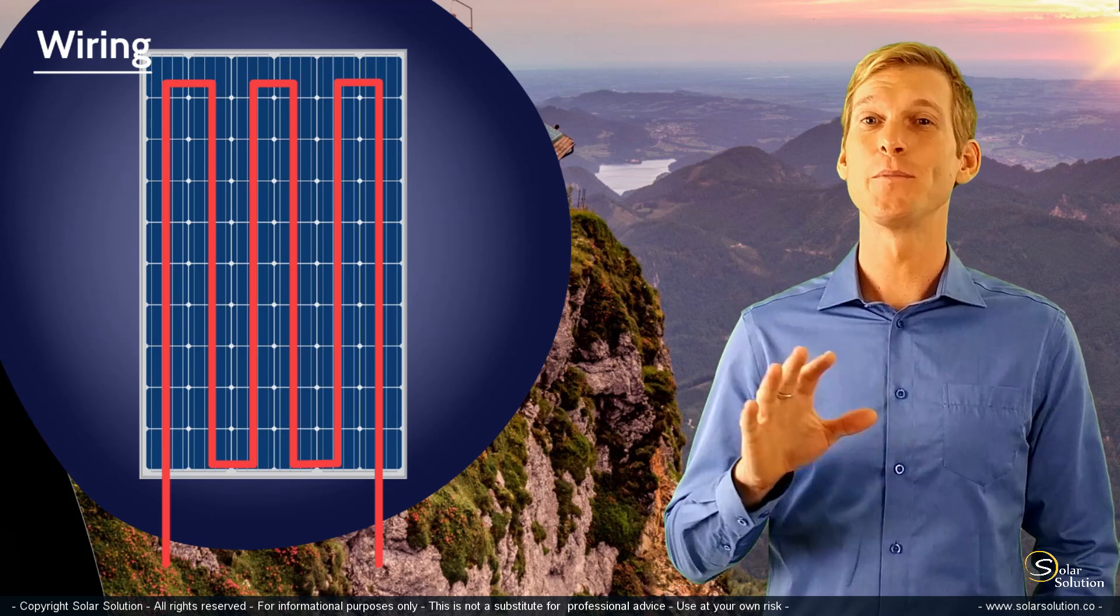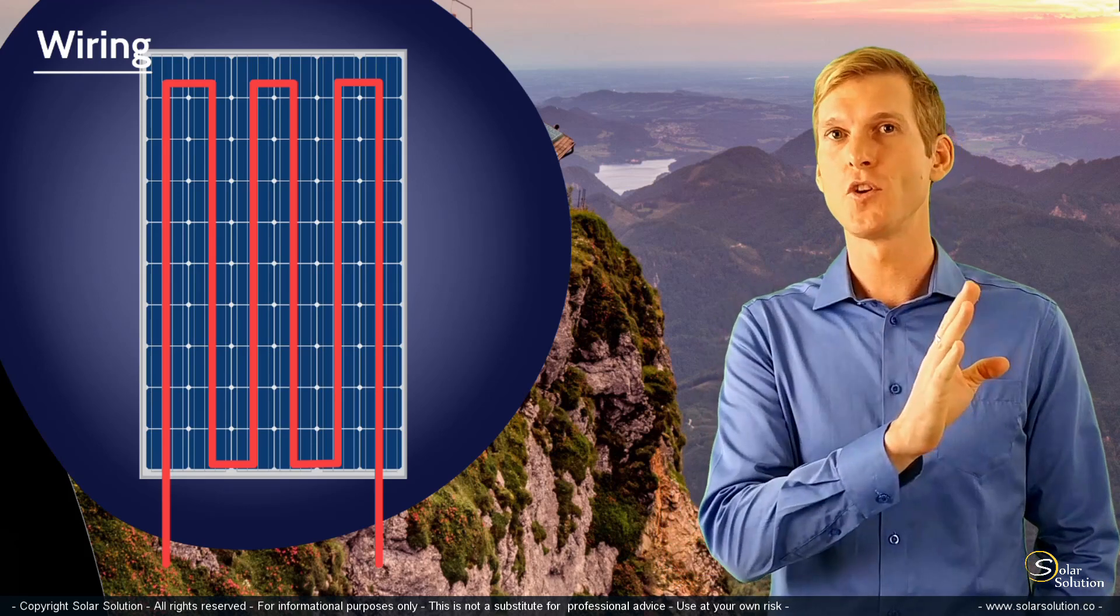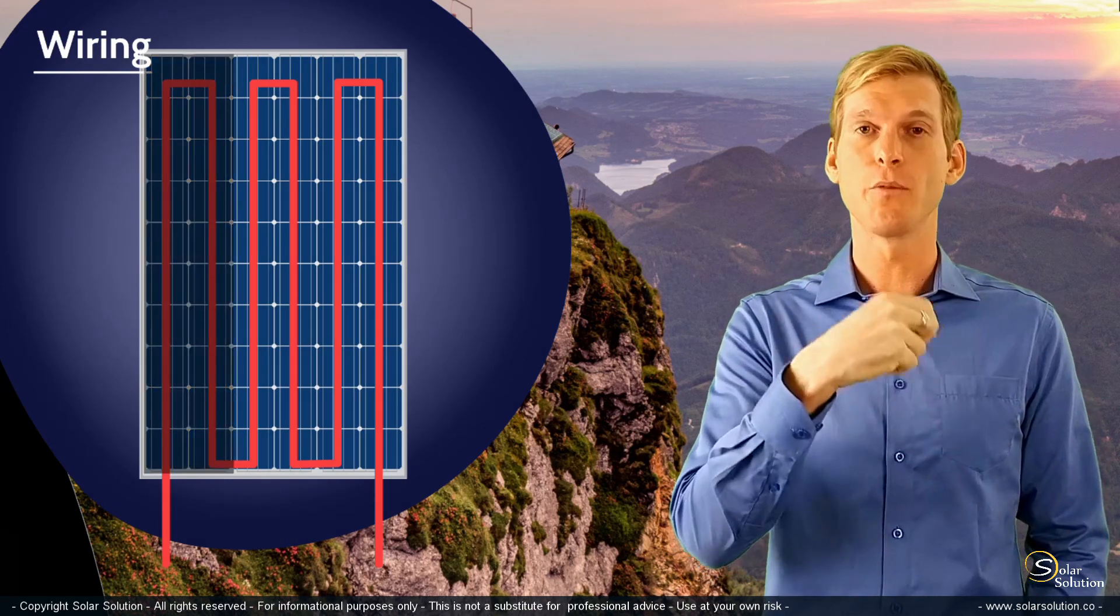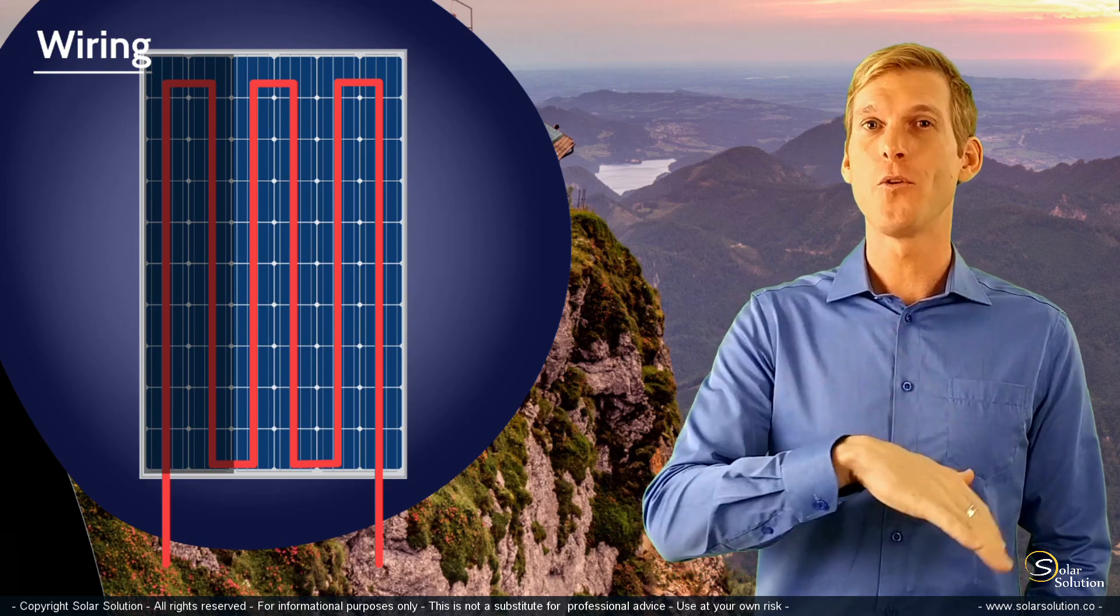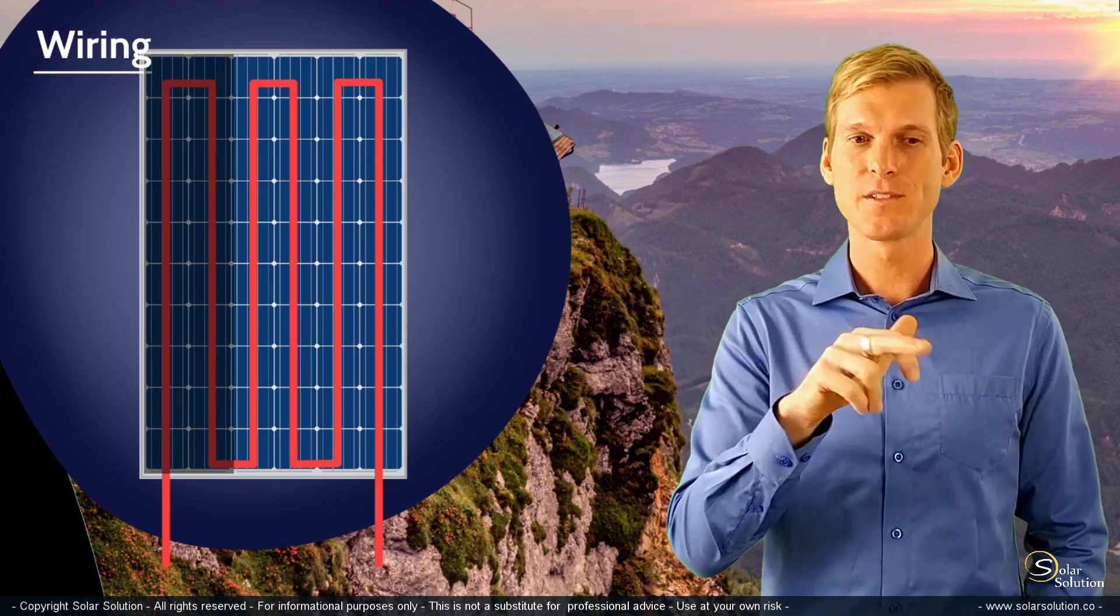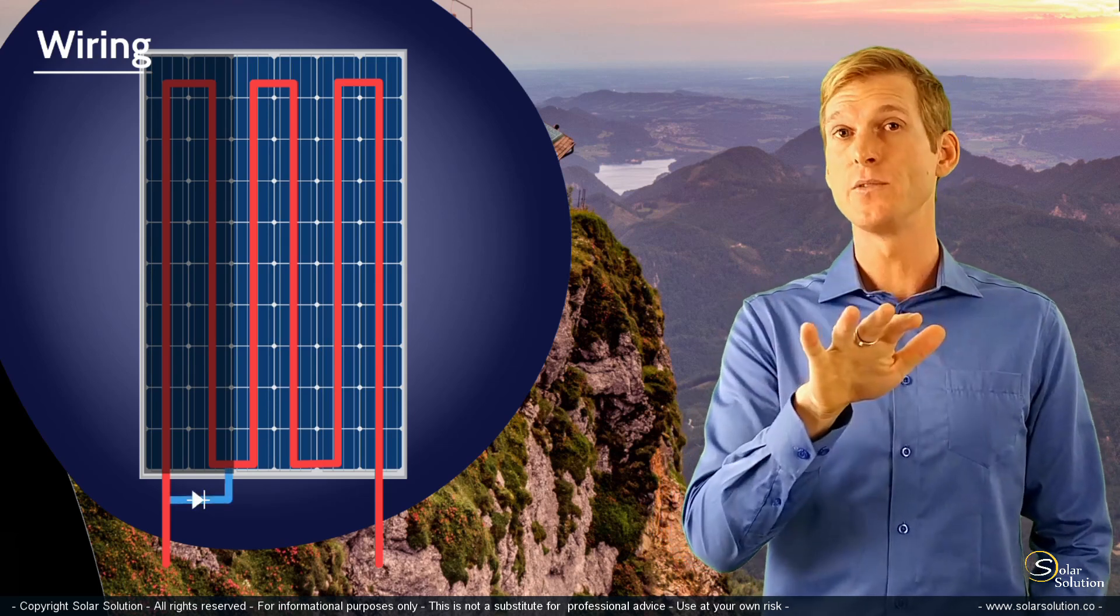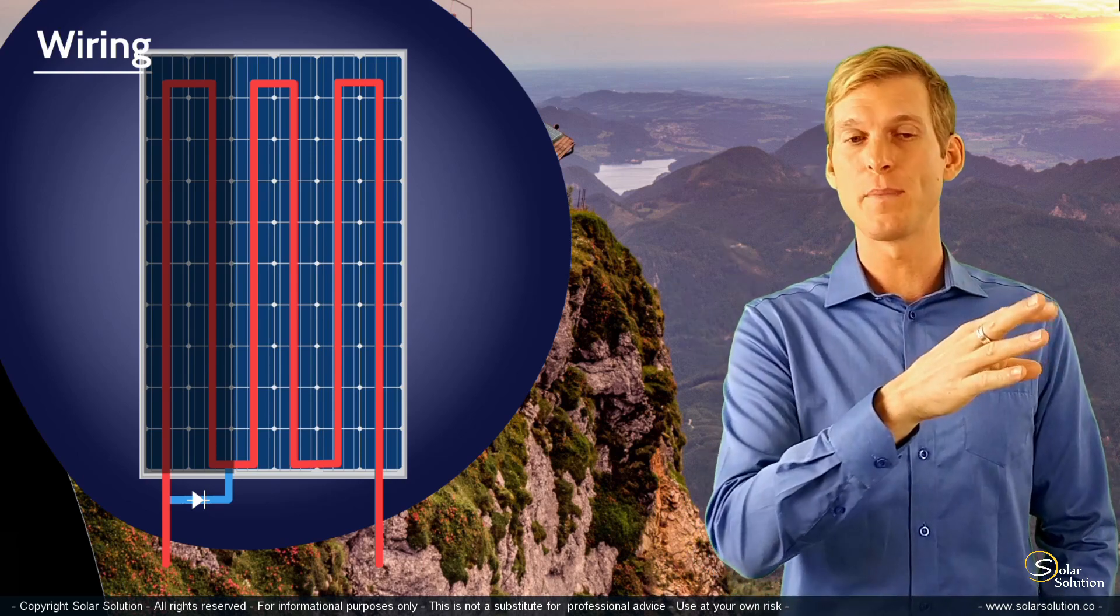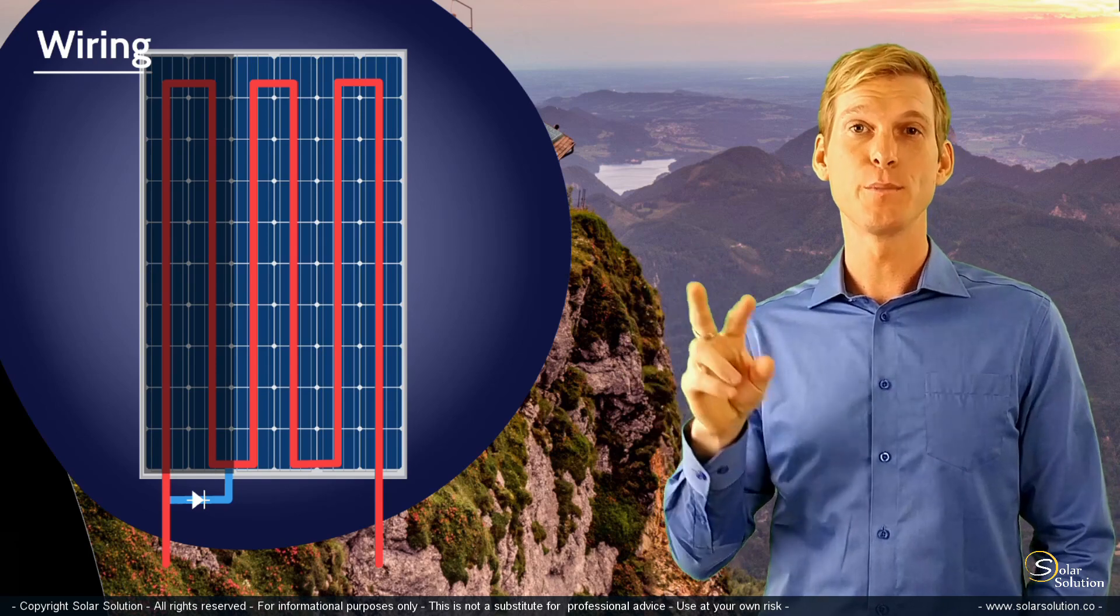Now the bypass diode comes to the rescue. Imagine that the first third of the solar panel is malfunctioning, either due to shade or due to something broken inside the panel. Then, in order to avoid the whole panel from stopping, the bypass diode will provide an alternative path for the electricity to flow. In this situation, the bypass diode will cancel out the first third of the panel and still allow the other two-thirds to perform.